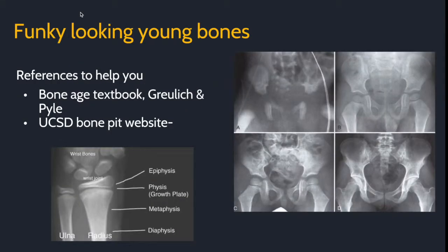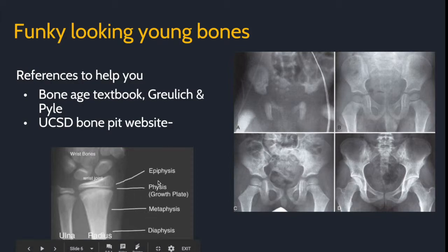Young bones can look really strange. Here are some references to help you: the bone age checkbook, which is in all of the reading rooms, and the UCSD bone pit website, which shows examples of normal radiographs throughout the ages of patients, even if the website looks like it's 20 years old. The epiphysis is the end of the bone, the physis is the growth plate, the metaphysis is the transition zone, and the diaphysis is the thick cortical bone. Here is a series of pelvic radiographs of a child at birth, 2 years, 5 years, and 15 years old.